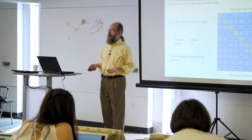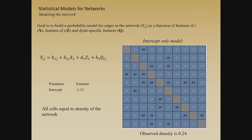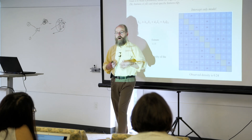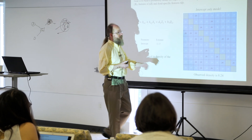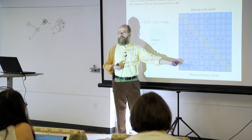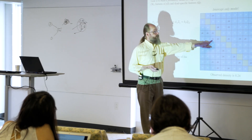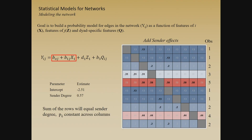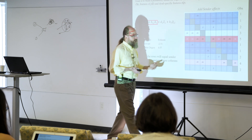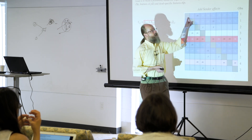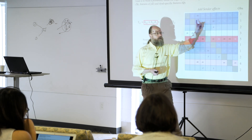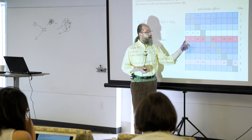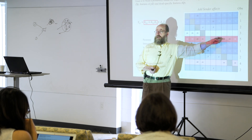Starting with an intercept-only model: Y_IJ is just a function of the intercept, predicting the same thing for every cell. The density is 0.24, so the probability of any given tie is 0.24. It's a bad model — it'll miss this tie three out of four times. Adding sender effects means for each row I add their degree as a covariate. This person has a lower probability (row density 0.13), while this person has a very high out-degree of five, so over half the ties in this row should be one.